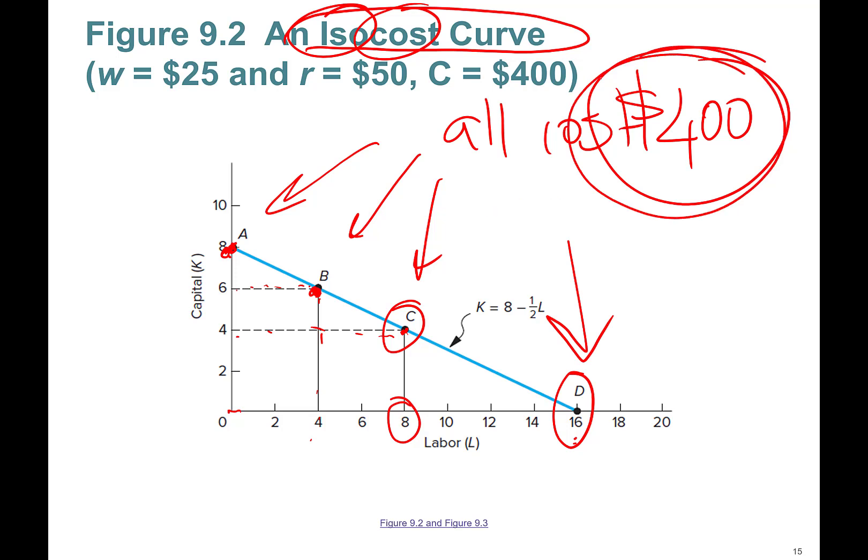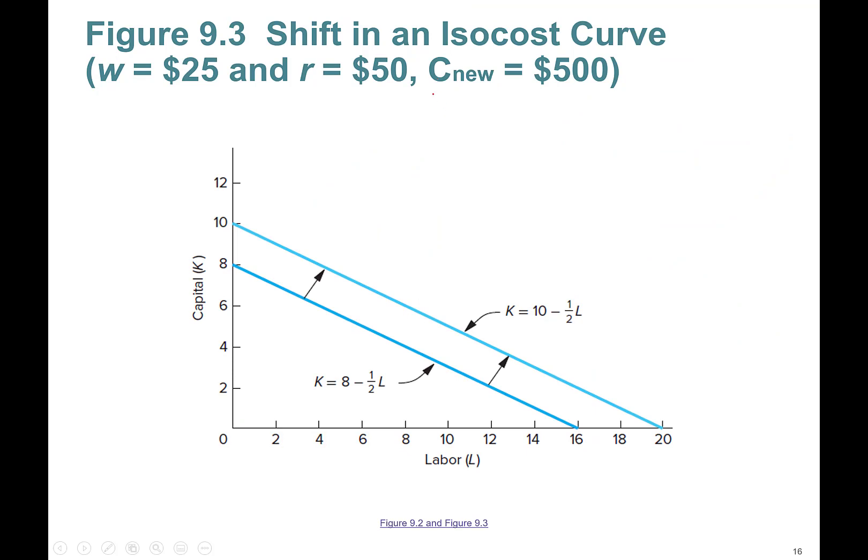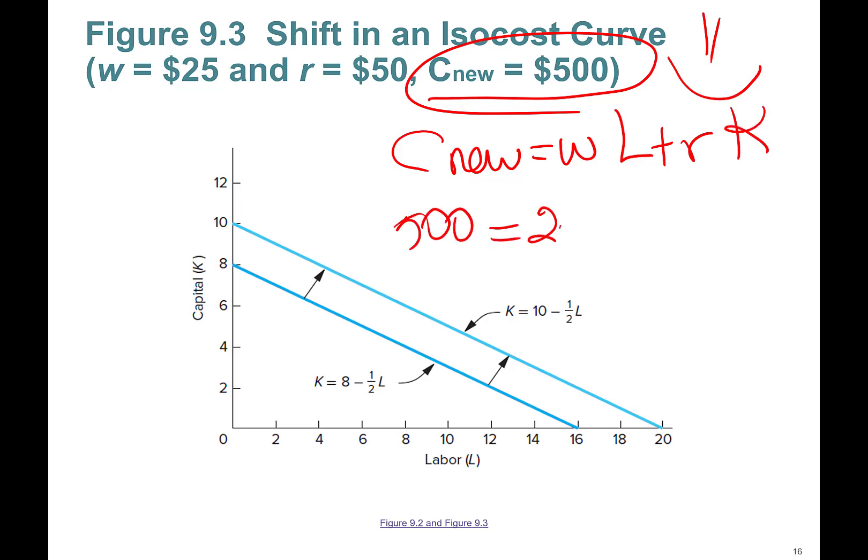generate the same cost. Okay, what happens if my cost goes up? So I can, let's say, spend more money. So that's the next slide. Let's say I now can dedicate not $400, but I can now put in $500 in production. That's awesome. I'm gonna put a smiley face. Okay, so then I can write the new formula. Nothing changes. It's the same formula: 500 equals 25 times labor plus 50 times capital.